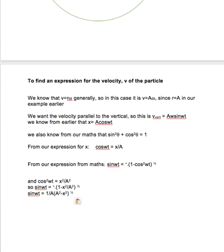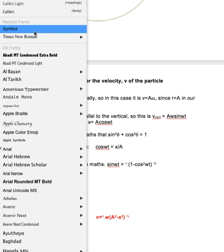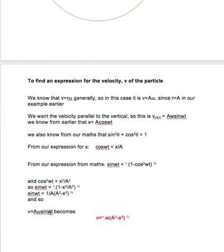Okay, so on that basis then, v equals A omega sine omega t. And again that should be an omega. Because v is plus or minus omega root A squared minus x squared, and this again is an expression that you need for your A level. You have to be able to use that.